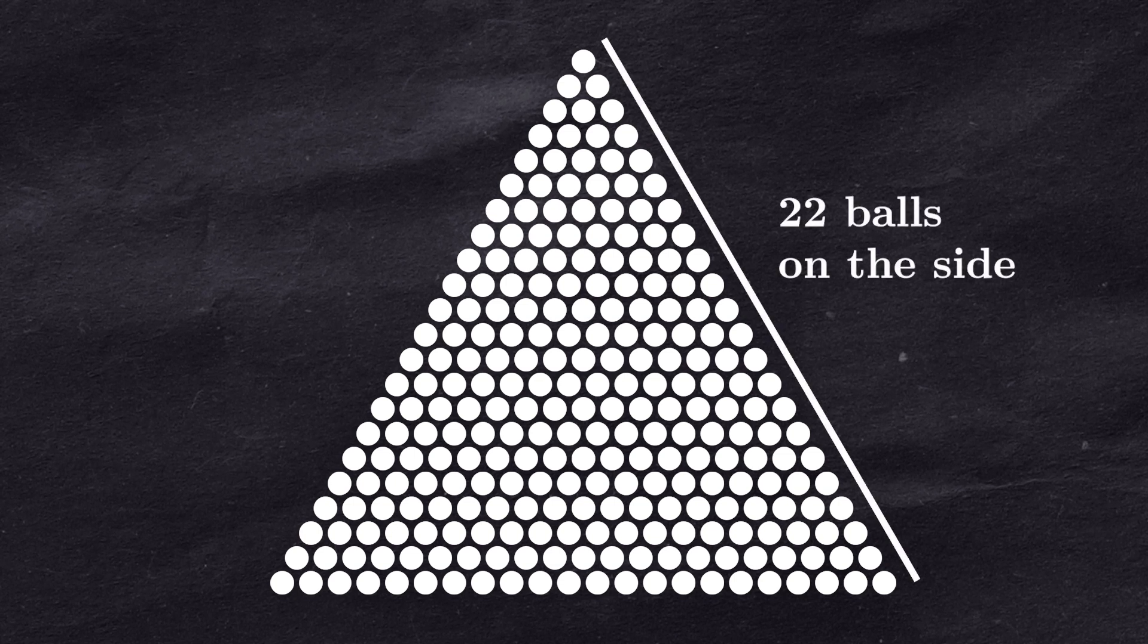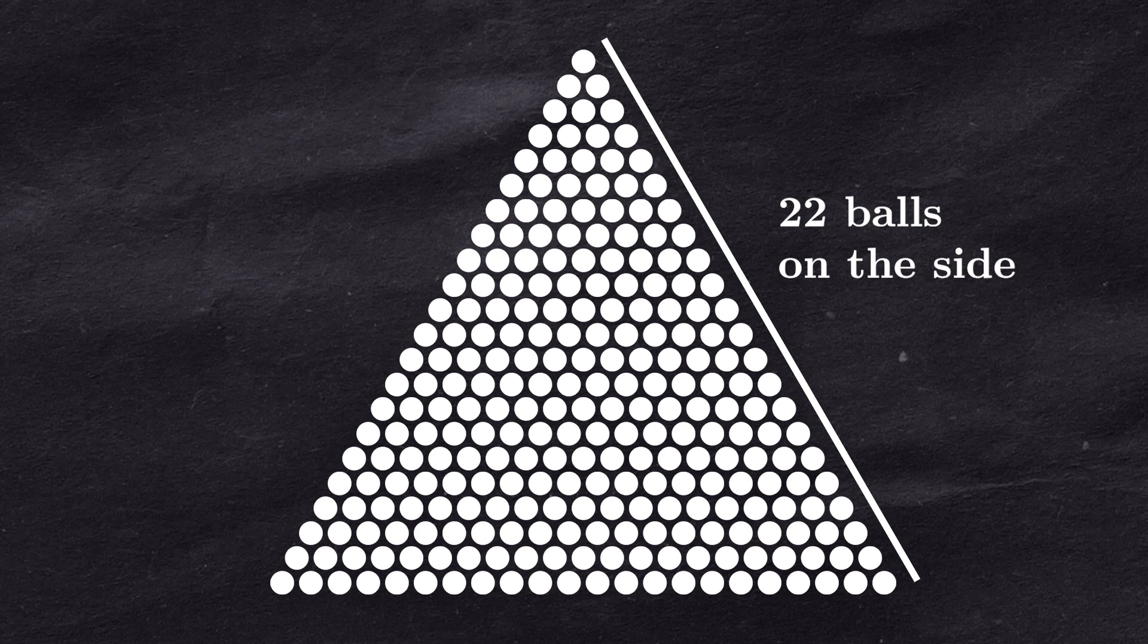Let us start with a triangle made out of balls, which is exactly 22 of them on the side. I know it sounds very random, but trust me, we'll get to the point.